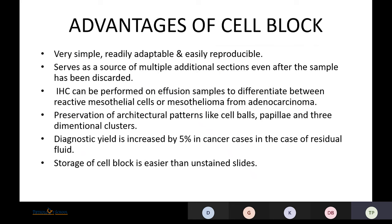Advantages of cell block: it is a very simple, readily adaptable, and easily reproducible method. It serves as a routine source of multiple histological sections. Even if the sample has been discarded, IHC can be performed on effusion samples, which is helpful to differentiate reactive mesothelial cells from adenocarcinoma. There is preservation of architectural patterns such as cell balls, papillae, and three-dimensional clusters. The yield is increased by 5% in cancer cases, and storage of cell blocks is easier than unstained slides.